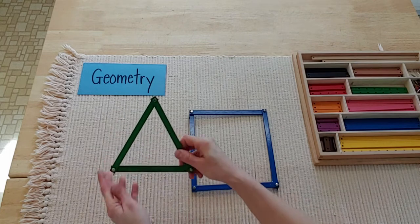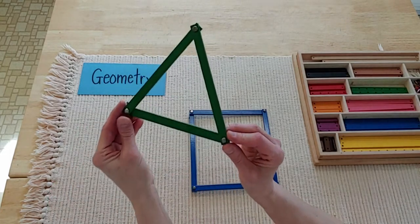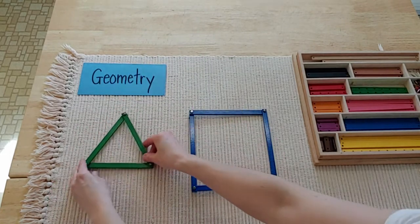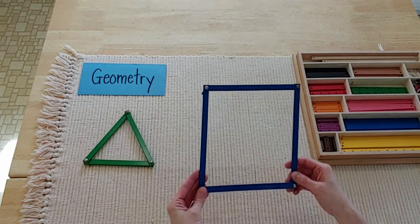I made this cute little equilateral triangle. It's green, one of my favorite colors. And I also made this blue square.